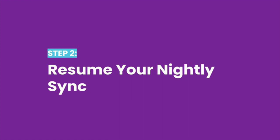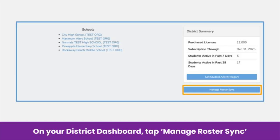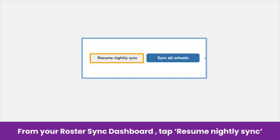Step 2: resume your sync. When you are ready for your student information system's data to be reflected in Seesaw and updated nightly, you will want to resume the nightly sync. Navigate to your Seesaw district dashboard and tap Manage Roster Sync. From your roster sync dashboard, tap Resume Nightly Sync. This will resume the sync between Clever or Classlink and Seesaw.